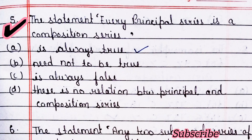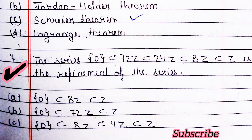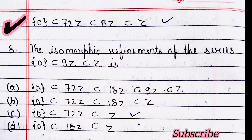Question number five: the statement 'every principal series is a composition series' — option A is right. Next question: the statement 'any two subnormal series of a group have isomorphic refinement' — option C is right. The series 0 ⊂ 72Z ⊂ 24Z ⊂ 8Z ⊂ Z is a refinement of the series — option B is right.